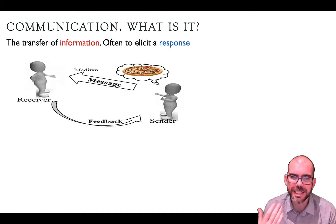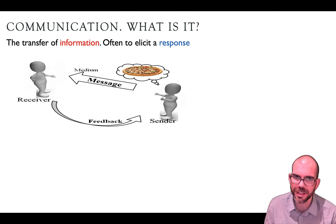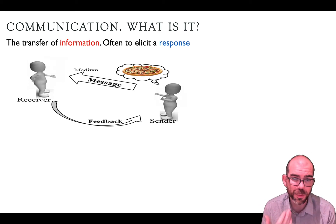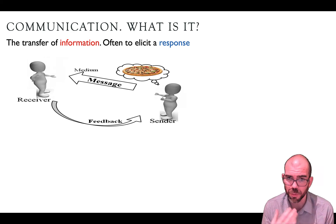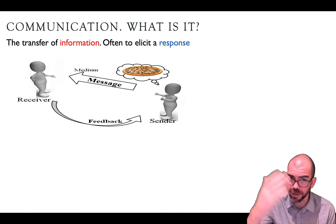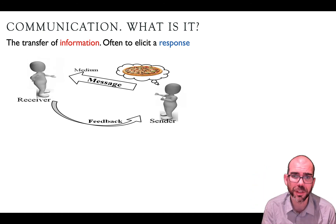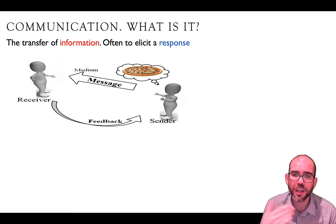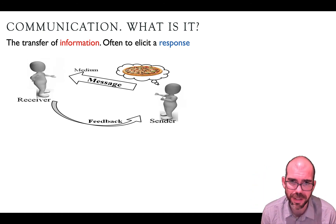For example, let's say you're thinking about a delicious pizza that you want. You're going to want to send that message to someone else. Humans have a variety of ways to send messages — we can do it verbally, like I am right now, using sound waves to send information, or visually, like I am with this picture.